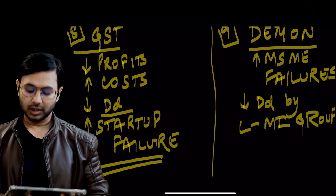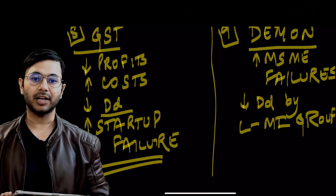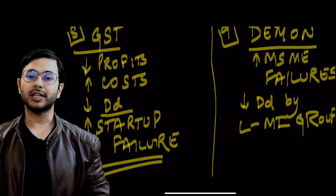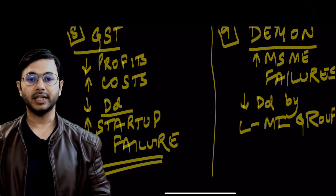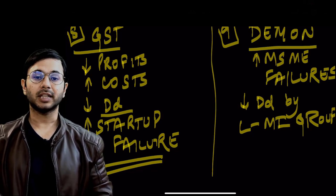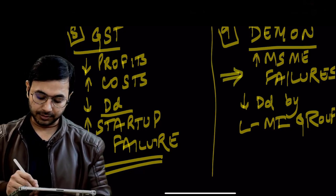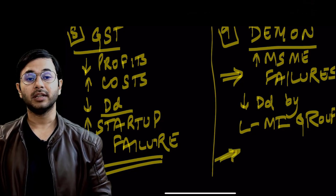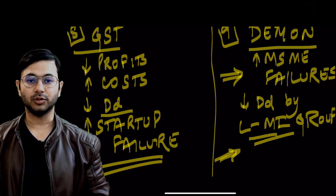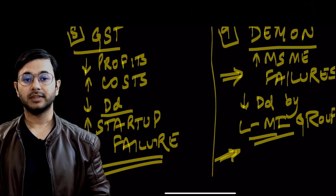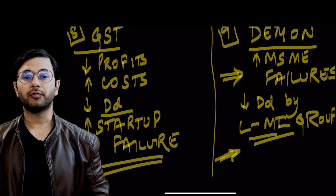Demonetization immediately sucked cash out of the economy. The lower and middle income groups and the MSME sector are completely reliant on cash for their immediate needs. Because of the cash withdrawal, MSMEs are witnessing widespread failures. Simultaneously, reduced cash availability has caused the lower and middle income group to significantly cut their demand for products. The result is low economic growth and a self-reinforcing vicious cycle of economic slowdown.